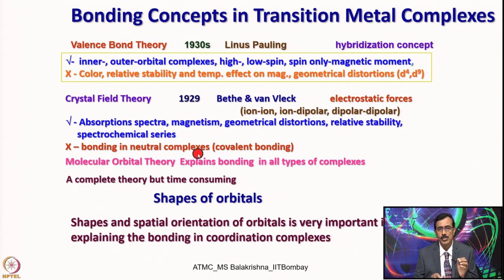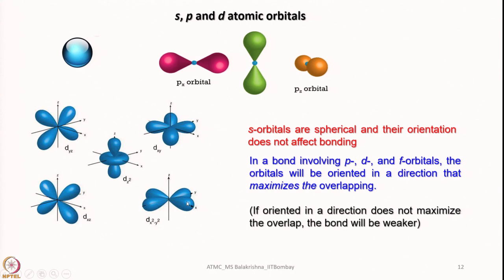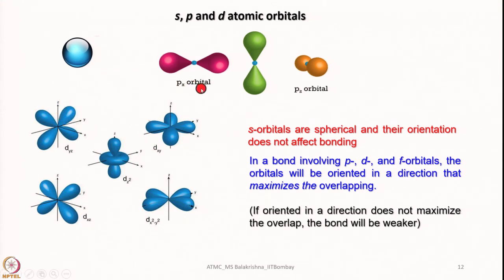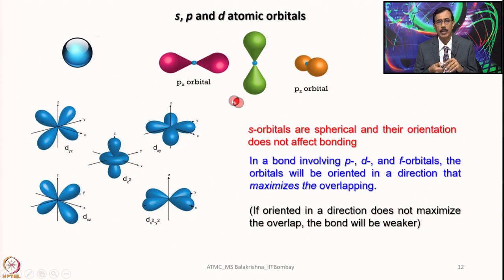Overall, molecular orbital theory explains bonding in all types of complexes; the MO theory currently in use is essentially ligand field theory incorporating the best parts of valence bond theory, Mulliken's MO concept, and Crystal Field Theory. Before digging deeper into bonding concepts, it is better to understand the shapes and relative orientation of orbitals in space. The s orbital is spherically symmetrical; p orbitals are dumbbell-shaped (px, py, pz, orthogonal to each other); and there are 5 d-orbitals: dxz, dyz, dz², dx²−y², and dxy. Orientation matters for p, d, and f orbitals — orbitals oriented to maximize overlap form stronger bonds.